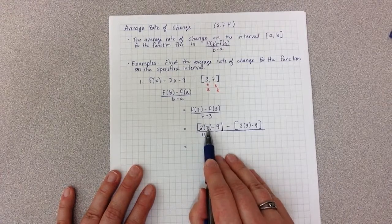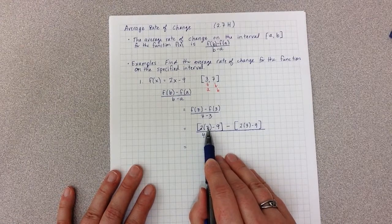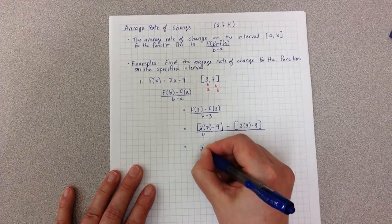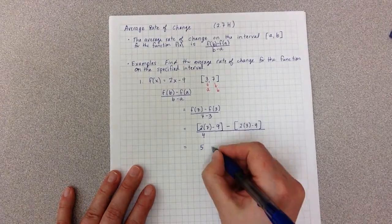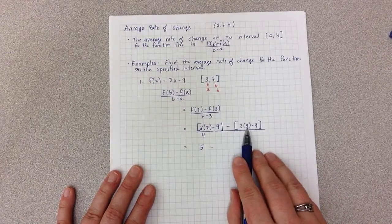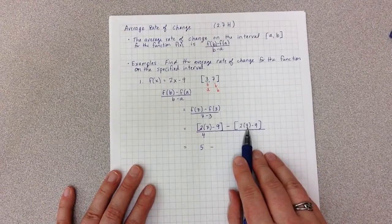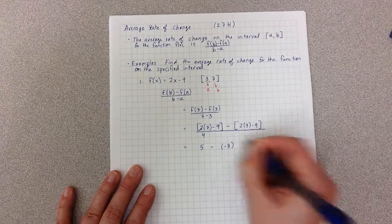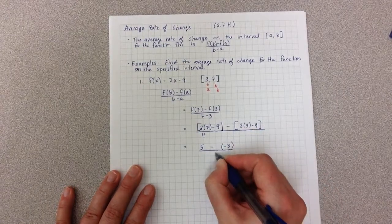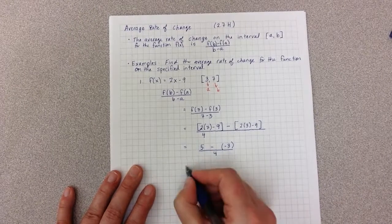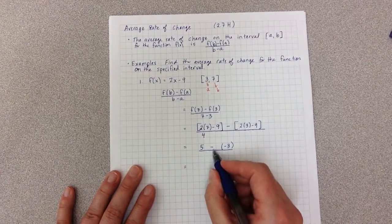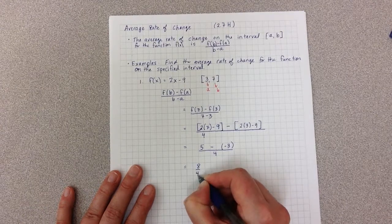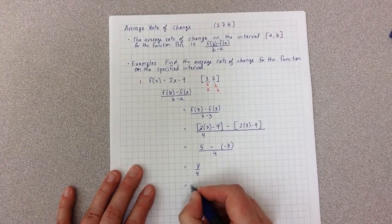So 2 times 7 is 14. 14 minus 9 is 5. Minus 2 times 3 is 6. Minus 9 is negative 3. All over 4. 5 minus negative 3 is 8 over 4, which is 2.